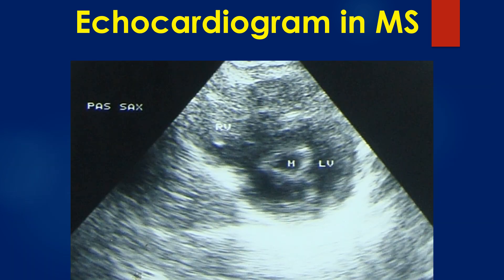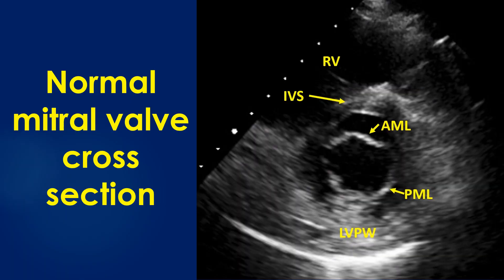The parasternal short axis view in mitral stenosis shows the fish mouth appearance of the mitral orifice in cross section. A normal mitral valve cross section is shown for comparison, demonstrating the anterior and posterior mitral leaflets widely separated. Scallops of the mitral leaflets are also visible, more clearly in the posterior leaflet.